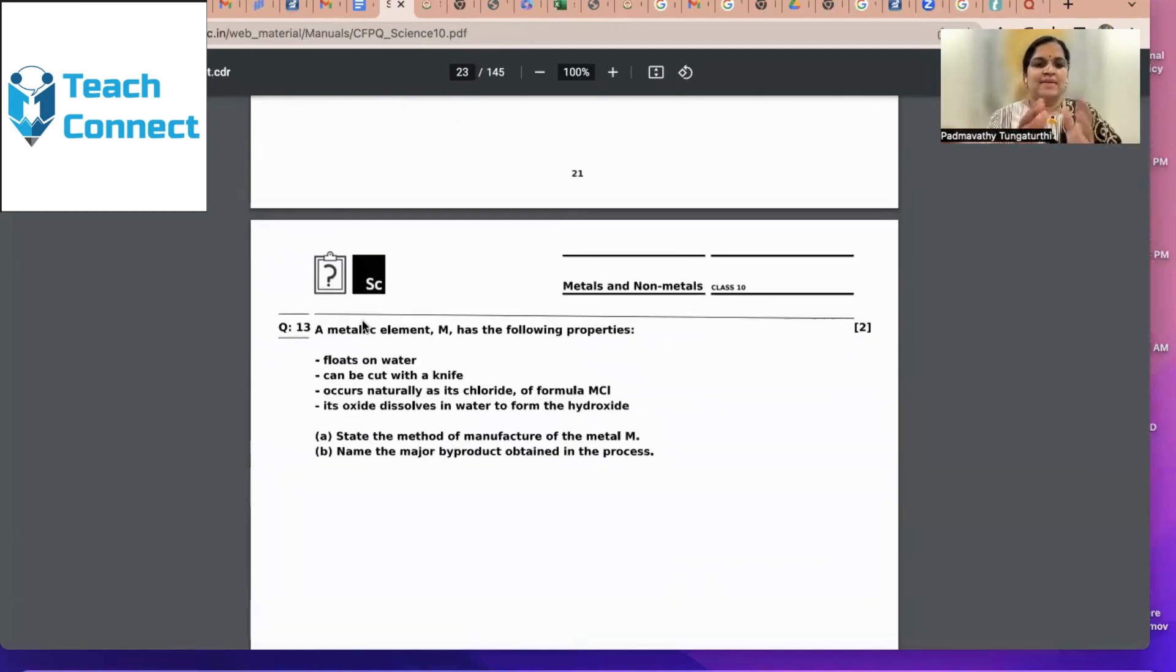That's what we can see here. Therefore, any metal element floats on water. These are the properties given here. Occurs naturally as its chloride of formula MCl. That means, either it should be KCl or NaCl. Dissolves in water to form hydroxide. Dissolves. That means, it is sodium chloride. And there is chlorine byproduct which is obtained.